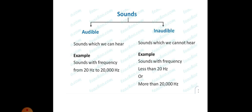As you all know, there are some sounds which we can hear and there are some sounds which we cannot hear. The sounds which we can hear are called audible, and the sounds which we cannot hear are called inaudible. So, sounds are classified into audible and inaudible sounds.